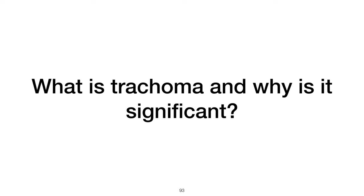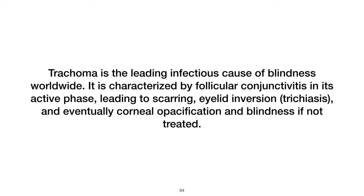What is trachoma and why is it significant? Trachoma is the leading infectious cause of blindness worldwide. It is characterized by follicular conjunctivitis in its active phase, leading to scarring, eyelid inversion, trichiasis, and eventually corneal opacification and blindness if not treated.